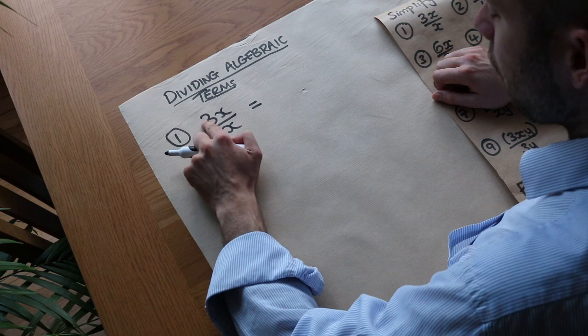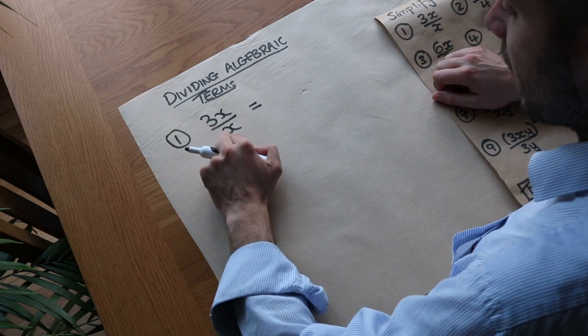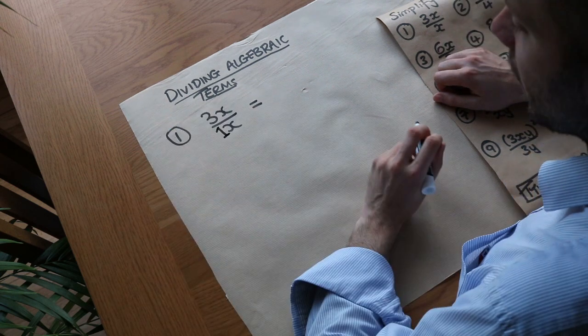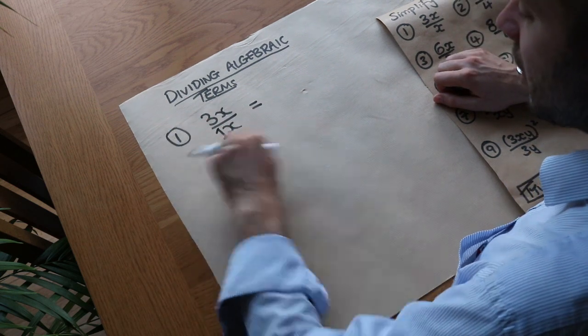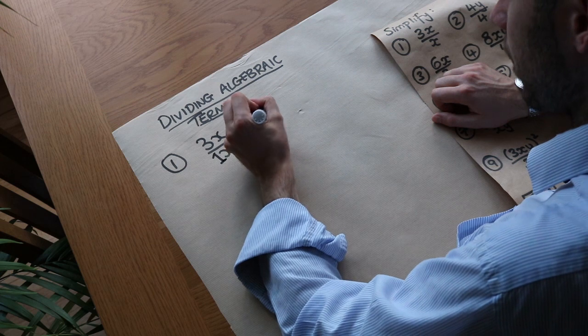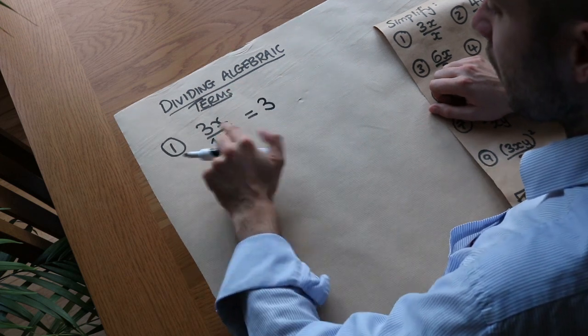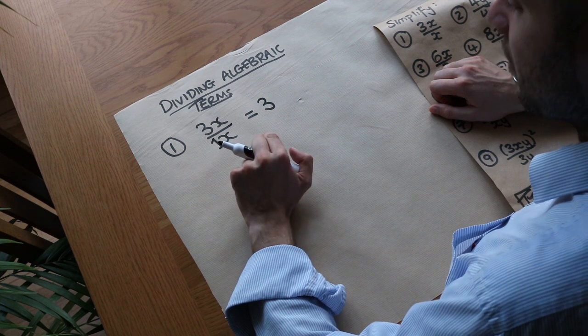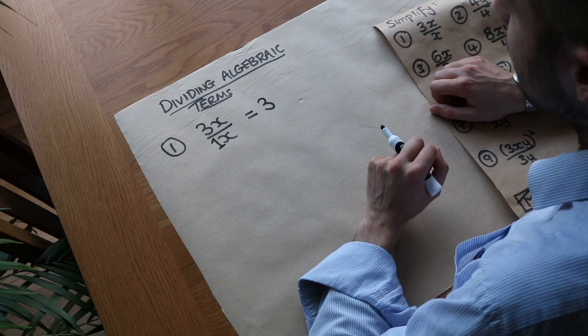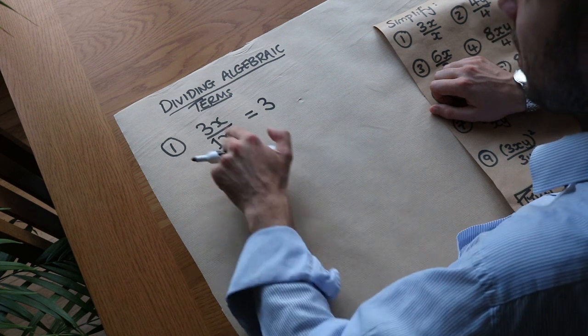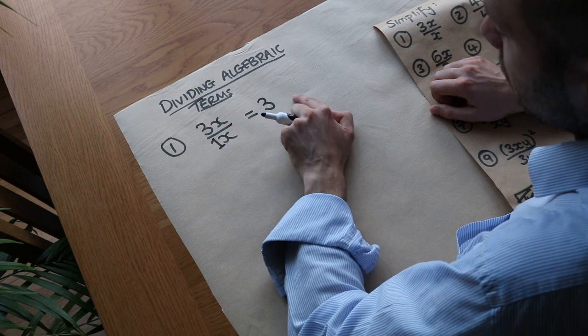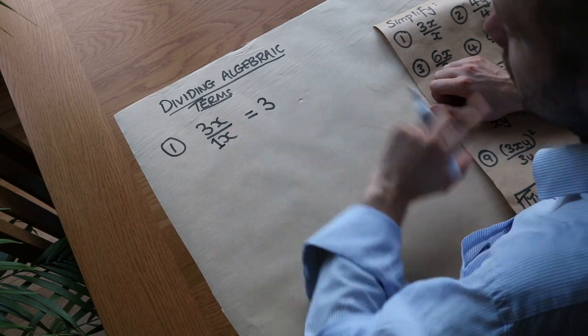So let's think about we've got three at the top first and we're dividing it by what? Well we could implicitly put a 1 at the bottom, x is the same as 1x, and then we just say well what is 3 divided by 1? Well it's just 3. And then we look at the x's, if we divide x by x what happens? Well they effectively cancel. If I said what's 10 divided by 10 that's just 1 isn't it? If I divide x by x that's just 1 and we don't need to put that because 3 times 1 is just 3. So they cancel and it kind of disappears.